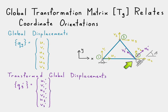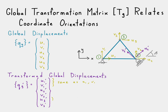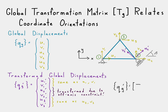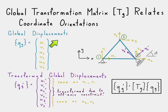The reason we want these transformed coordinates is that we can constrain v two prime to be zero, because it can't go beyond that constraint, beyond that slope. Meanwhile, u two prime is completely free. So we have our transformed global displacements. Note that u one prime, v one prime, u three prime, v three prime — those are the same as the global displacements. It's only node two that is transformed. The relationship between these transformed global displacements and the global displacements is that global transformation matrix.